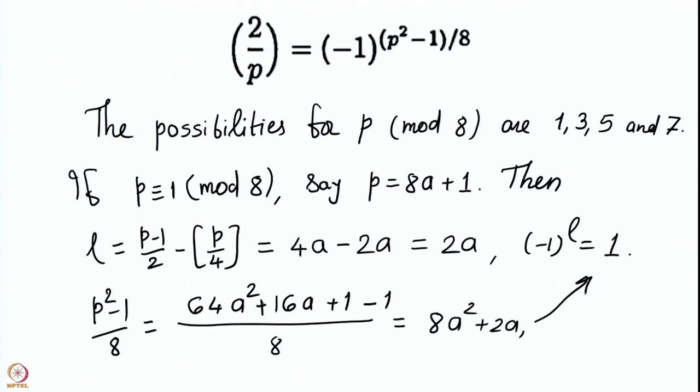This computation needs to be done for each of the four congruence classes modulo 8: p congruent to 1, 3, 5, and 7 mod 8. Doing so tells you exactly what the Legendre symbol (2/p) is, once we have Gauss Lemma. So in this lecture we recalled Gauss Lemma and used it to compute the Legendre symbol (2/p).